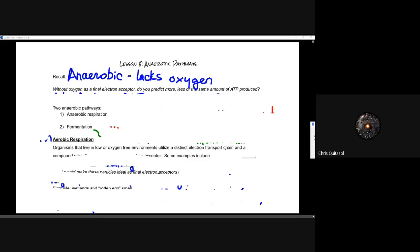When we think about aerobic versus anaerobic, aerobic had to do with oxygen. Anaerobic, which is the topic of this lesson, lacks oxygen. You'll start to see some of the connections between some of the gaps in cellular respiration in terms of where things come from, and you'll start to see it being produced or connected to anaerobic respiration. Without that oxygen as that final electron acceptor, do we predict more, less, or same amount of ATP produced?